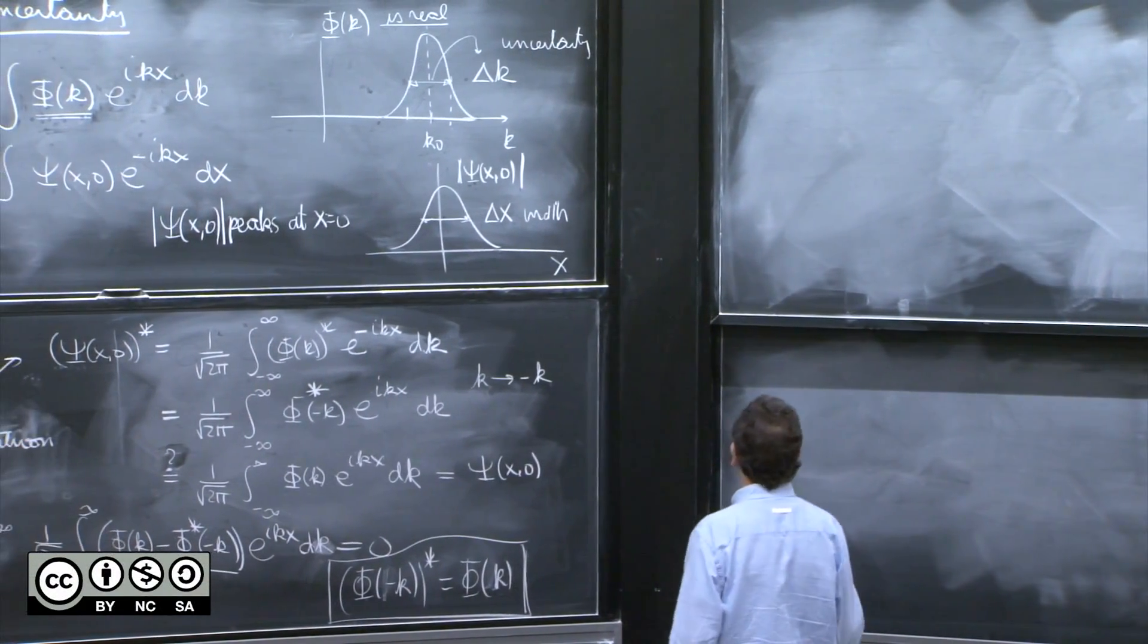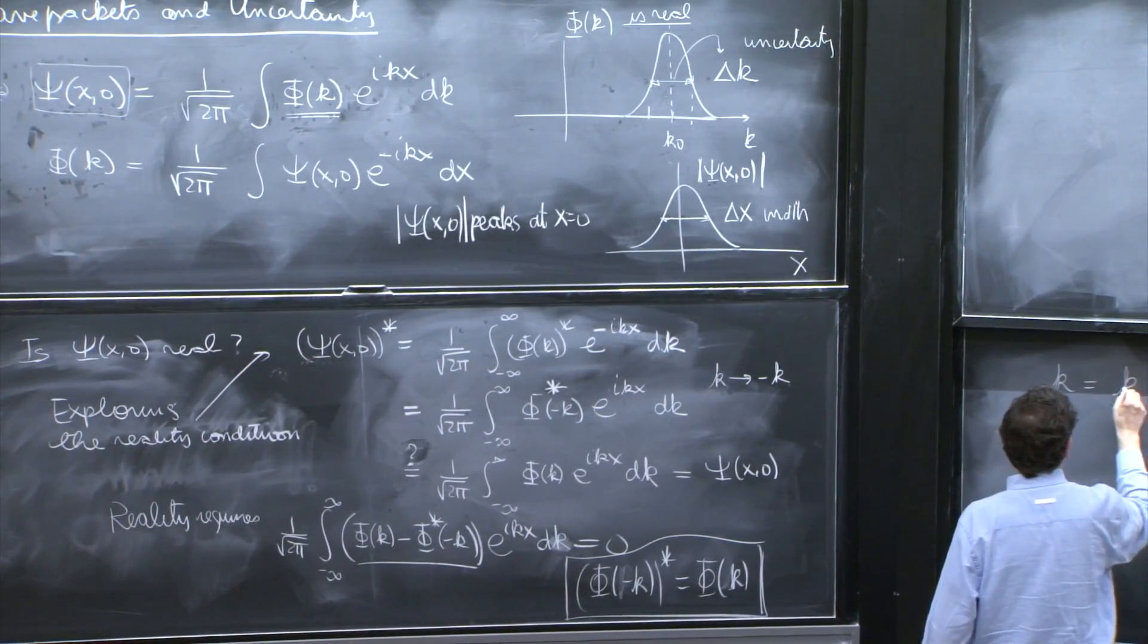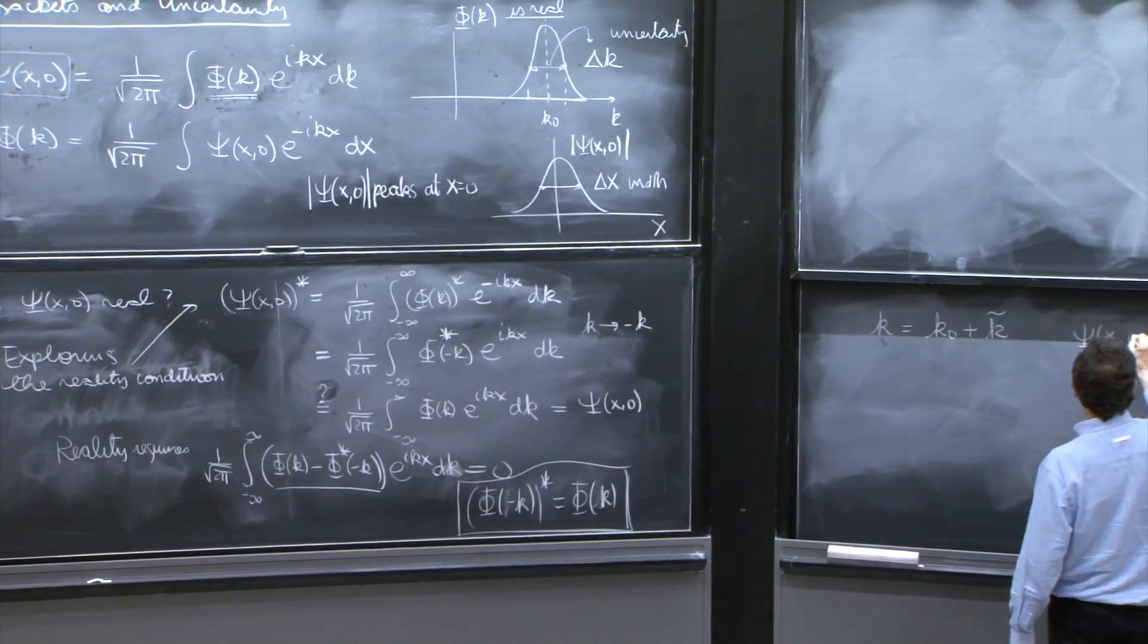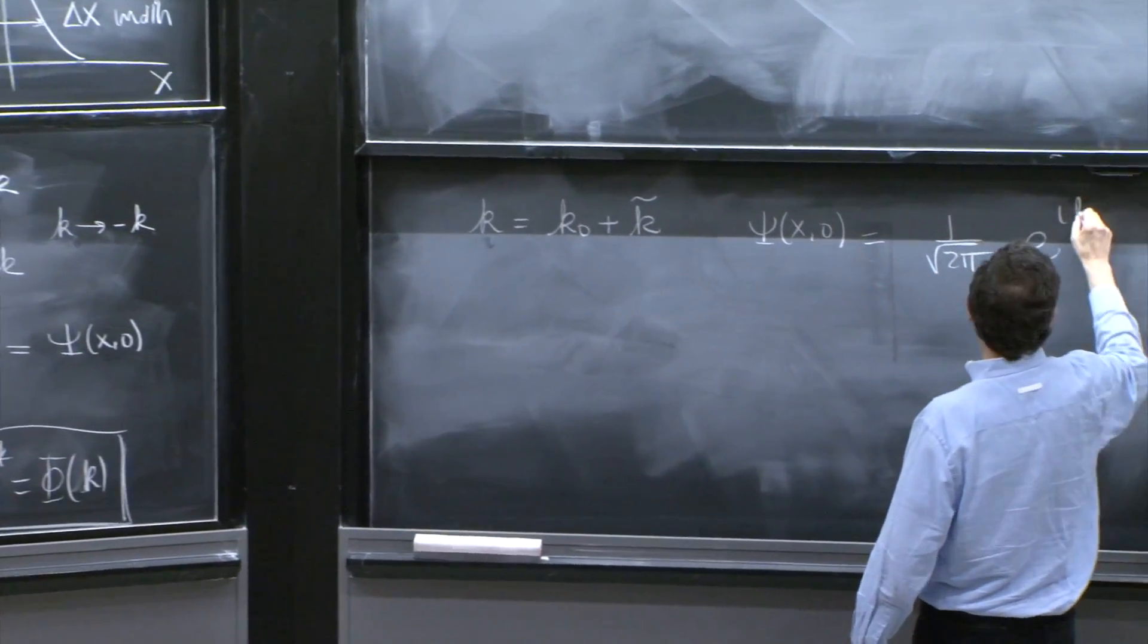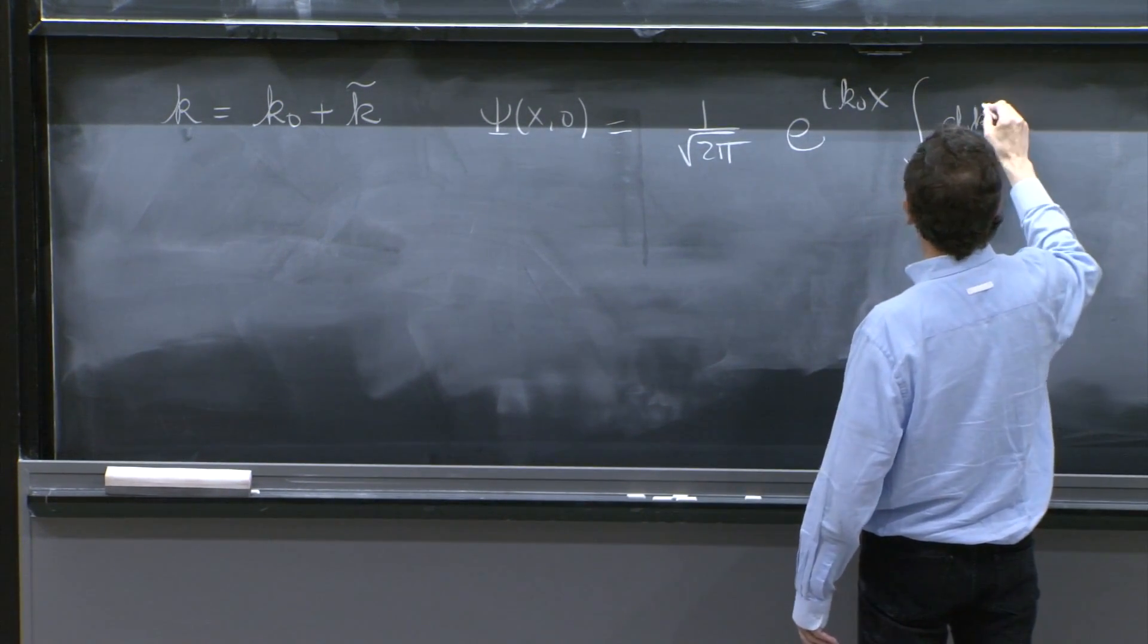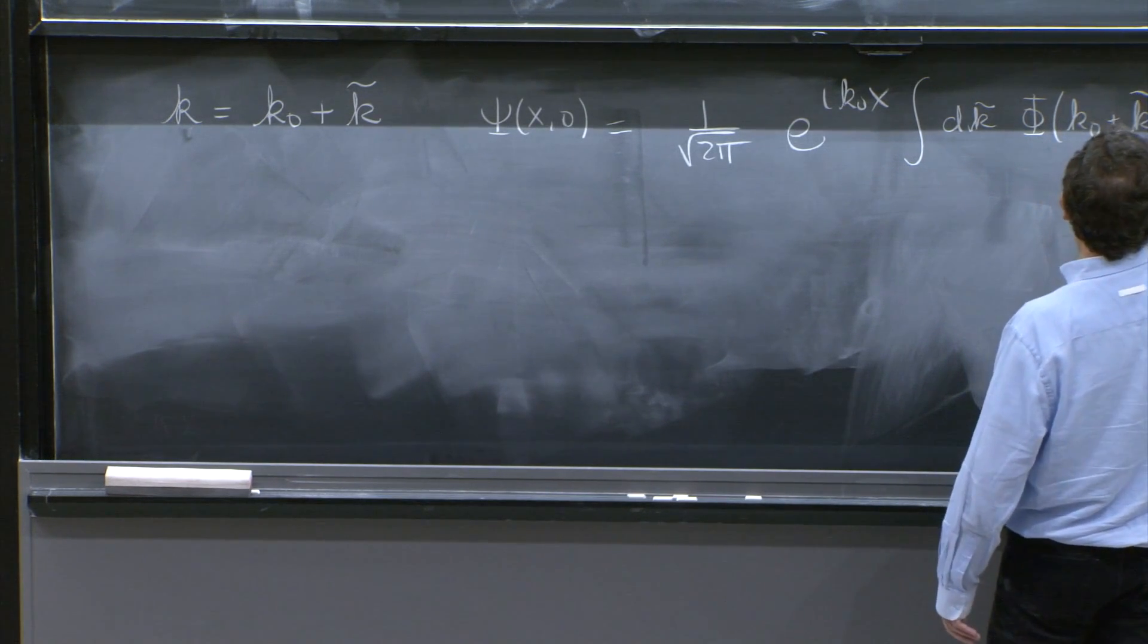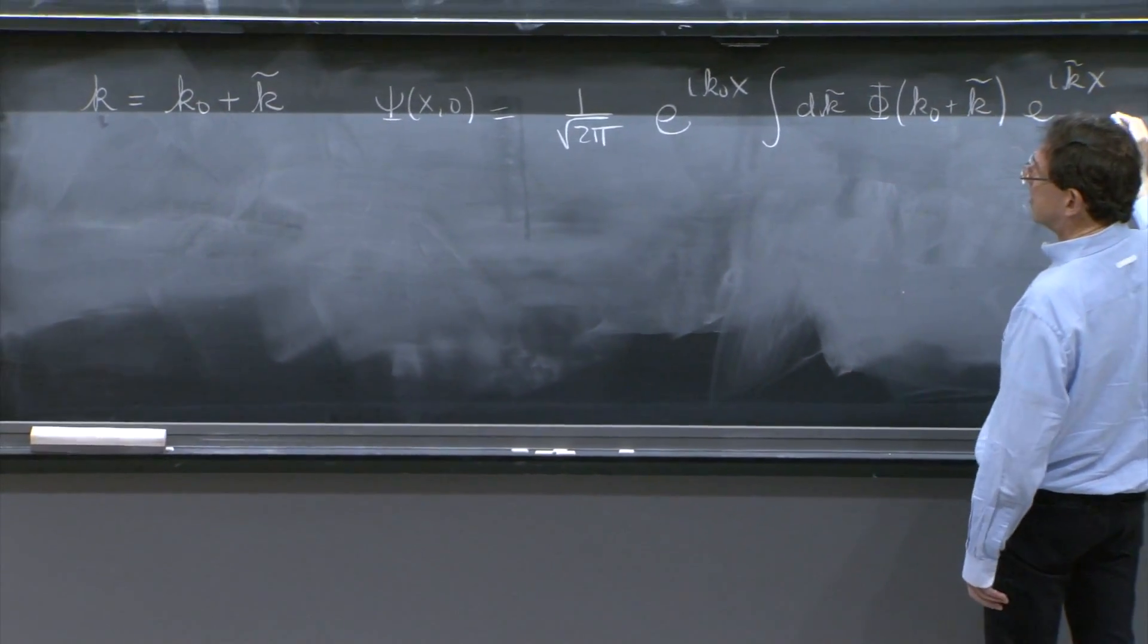So we go back to the integral. We think of k. We'll write it as k0 plus k tilde. And then we have ψ(x0) equal 1 over square root of 2π e to the ik0x. That part goes out. So this integral dk tilde φ of k0 plus k tilde e to the ik tilde x dk.